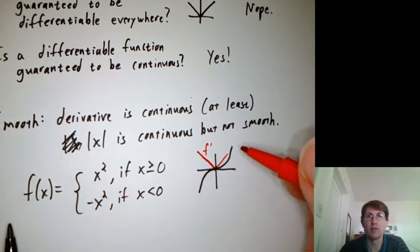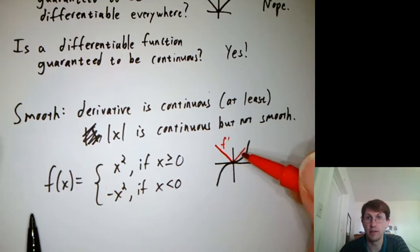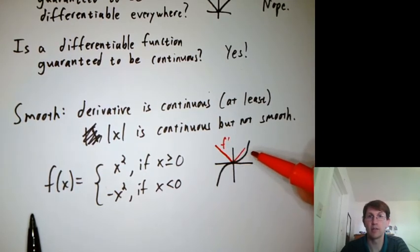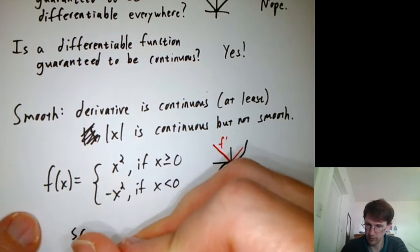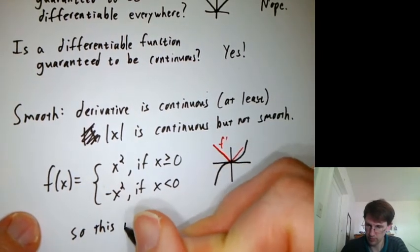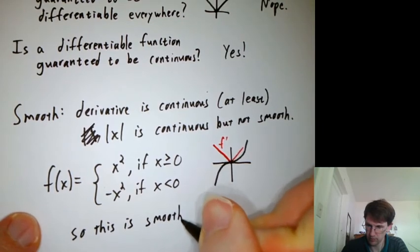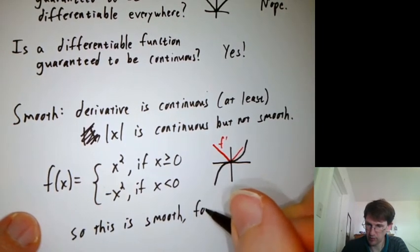So its derivative exists everywhere, and the derivative is continuous. So this is smooth for the first derivative.